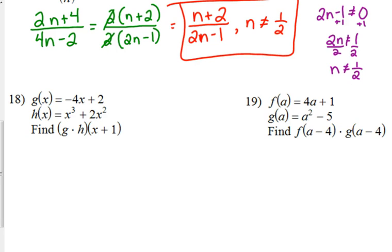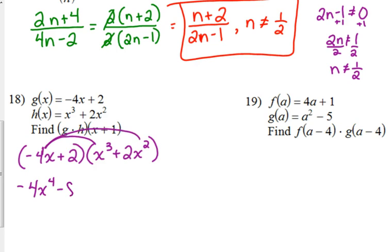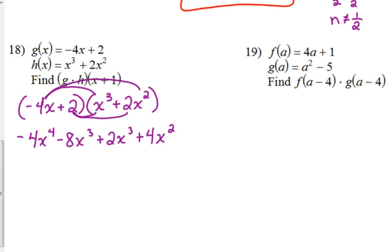Let's do the g times h part first. Negative 4x plus 2 times x cubed plus 2x squared. We multiply the first two terms, negative 4x to the fourth. Multiply the outside terms, negative 8x cubed. Inside, positive 2x cubed. Last, positive 4x squared. Simplify. Negative 4x to the fourth minus 6x cubed plus 4x squared.